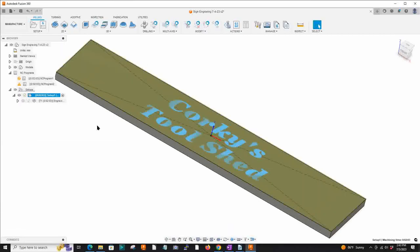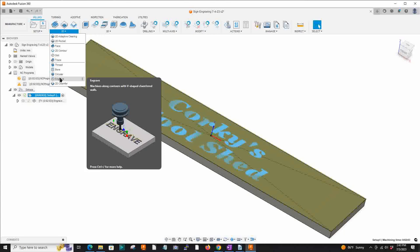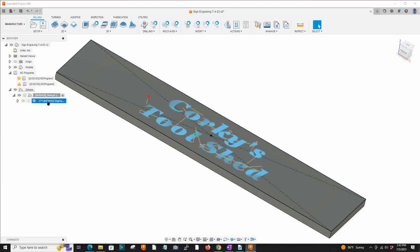Go to the manufacturing and then get your orientation and then select engrave. You have to go get a chamfer tool if you got it all set up.